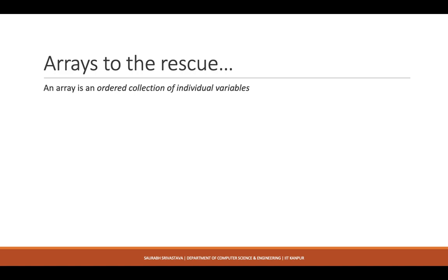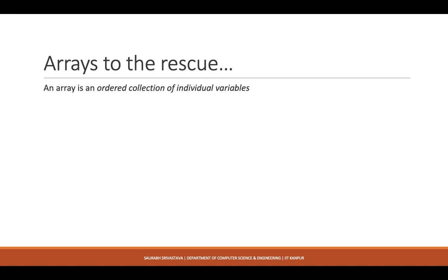An array is nothing more than a collection of individual variables. Instead of having marks1, marks2, marks3 and so on as five separate variables, you can create one array which is basically a collection of five integer variables. You then simply access the nth variable in this whole list, and as mentioned, it is ordered.